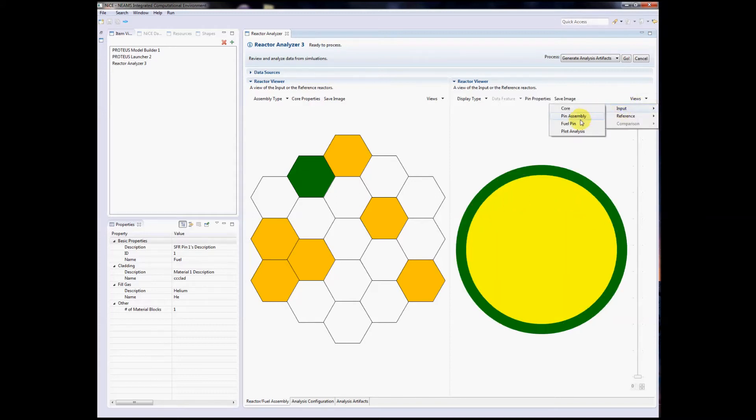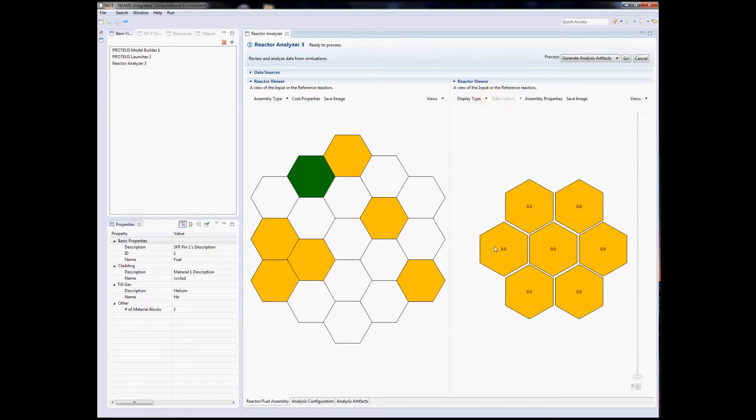In addition to the geometrical view, we can also look at state-point data, which in this case is zero average neutron flux per pin for our simple test reactor.